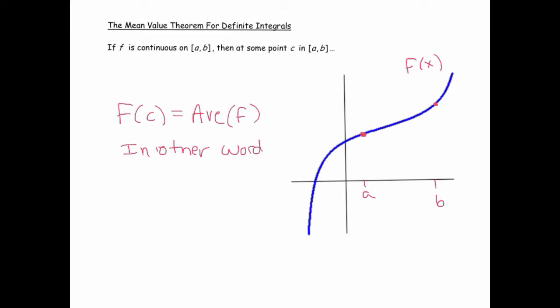In other words, f(c) equals the average value, which we saw to be 1/(b - a) times the integral from a to b of f(x).